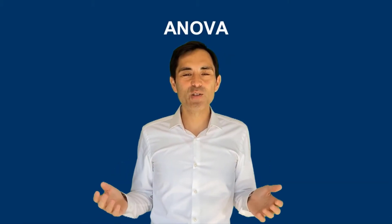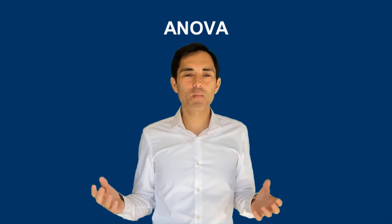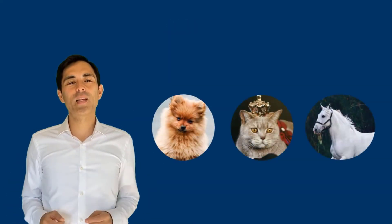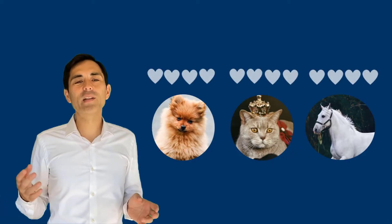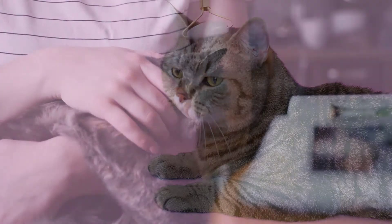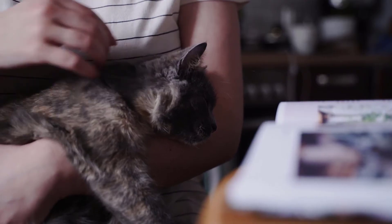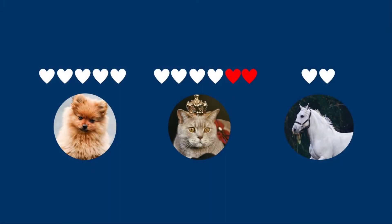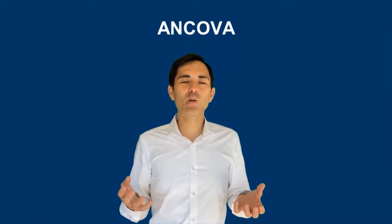ANOVA can compare different means across groups. However, it cannot consider other variables that may play a role. To do so, we can conduct ANCOVA. Using the same example — dogs, cats, and horses, and loyalty — there might also be other variables that could explain loyalty, such as care and company. How much time you spend with the pet: the more time you spend, the more loyal the pet would be. Even a pet that is not as loyal as others could become very attached if you spend much time together. So it's very important to consider these other variables, and ANCOVA allows us to do so.